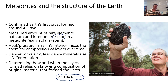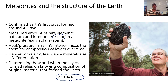Knowing how and when layers formed also requires knowledge of the original material that formed the Earth. Study of meteorite composition, combined with analysis of even the oldest parts of Earth's crust, suggests an age of around four and a half billion years — which is now the accepted age for the formation of the Earth as a solid, rocky planet that would, in time, be a place where life could begin.